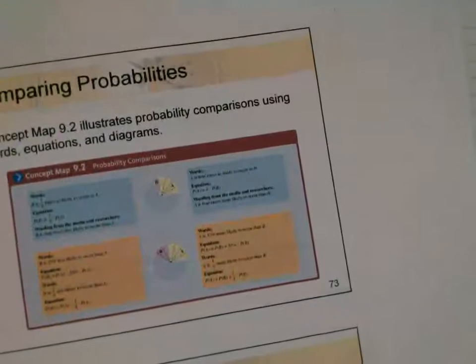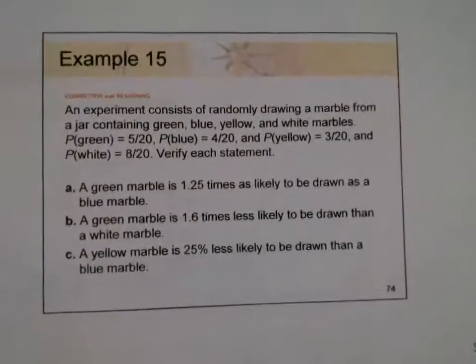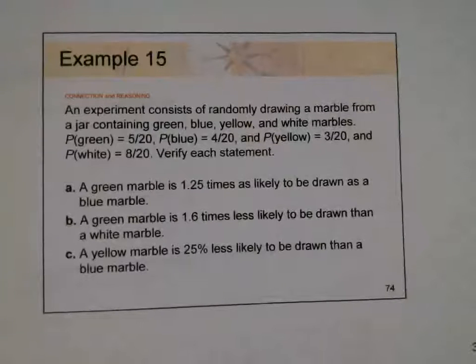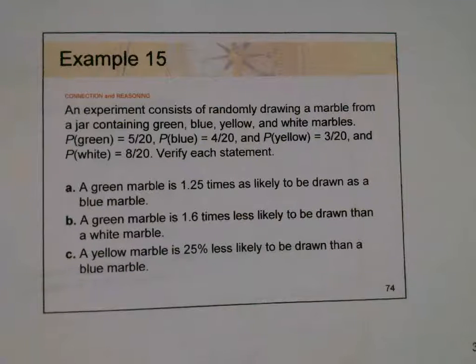Now let's look at Example 15, which is related to comparing probabilities. An experiment consists of randomly drawing a marble from a jar containing green, blue, yellow, and white marbles. The probability of getting green is 5 out of 20, blue is 4 out of 20, yellow is 3 out of 20, and white is 8 out of 20. In part A, we want to verify that a green marble is 1.25 times as likely to be drawn as a blue marble.